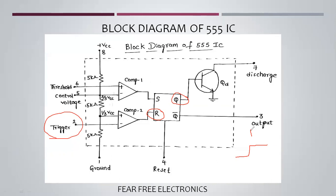The fourth pin is the Reset pin. It resets the entire circuit and the flip-flop. It acts as an on/off control for the circuit. If the reset pin value is 0 (low), it will reset the circuit and turn it off.